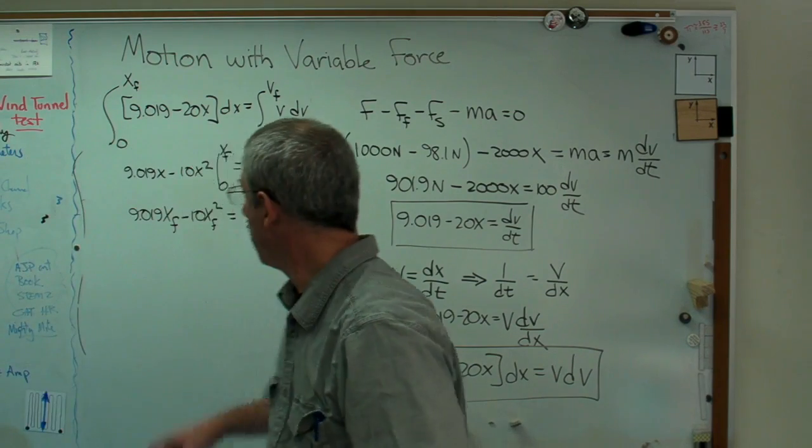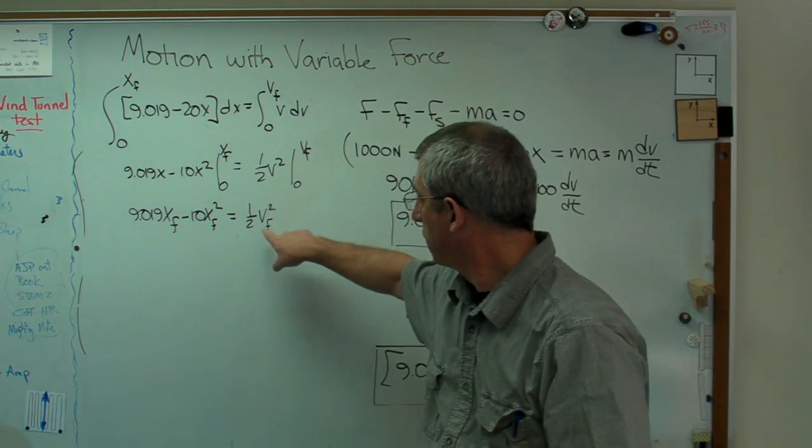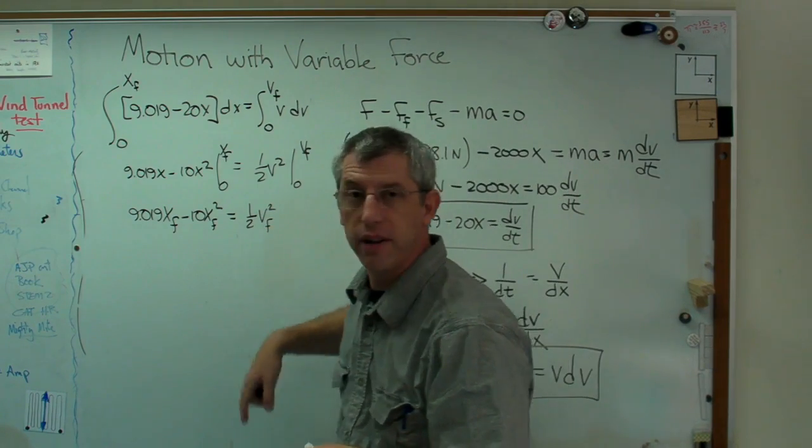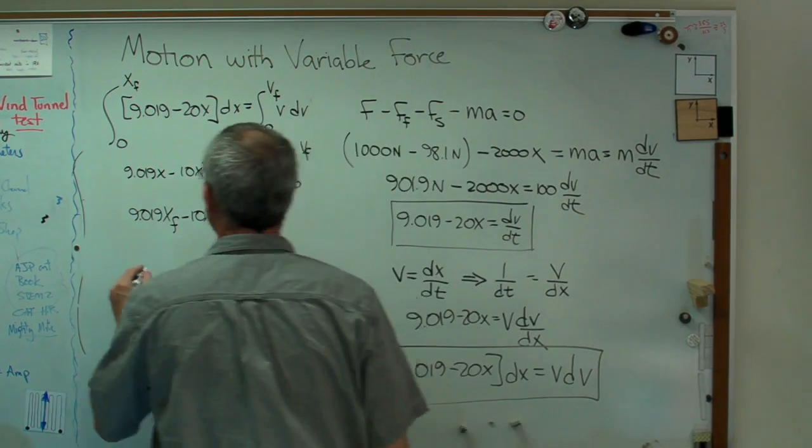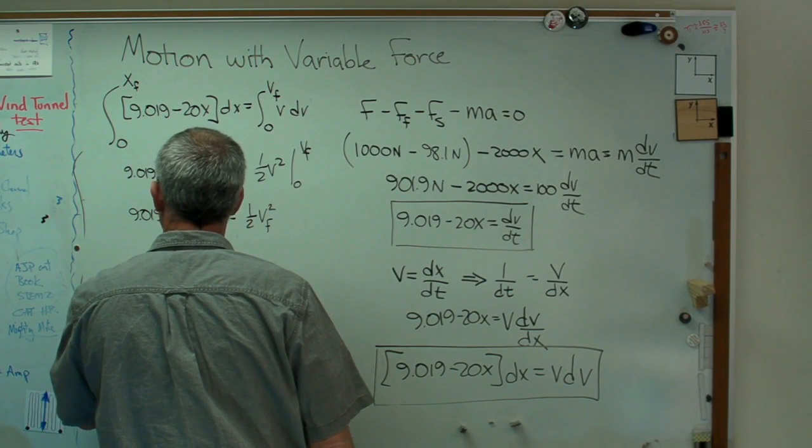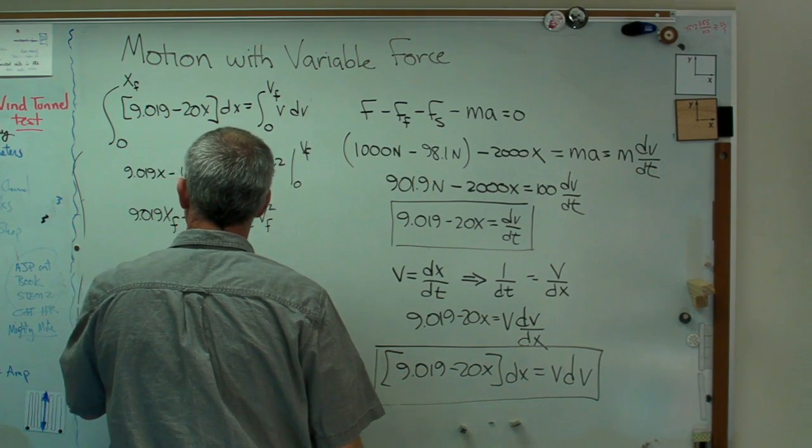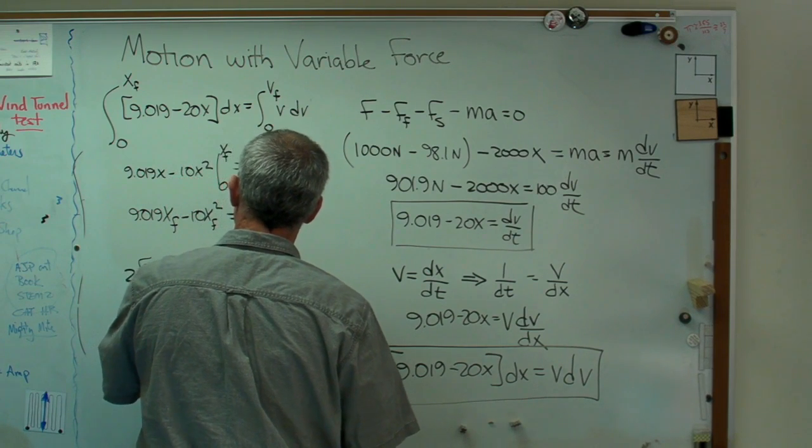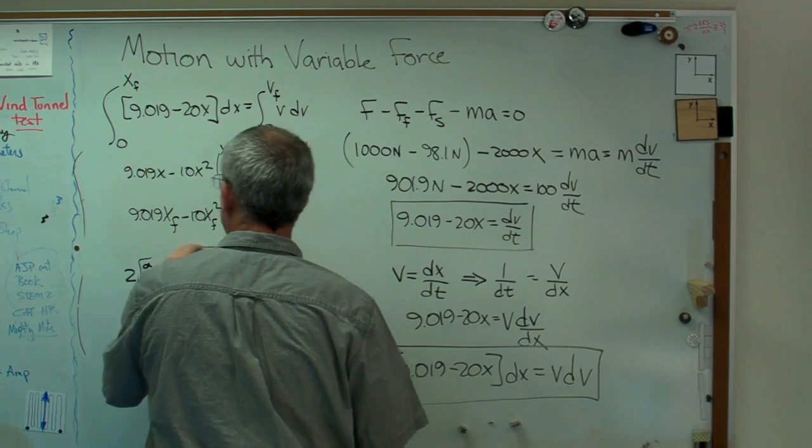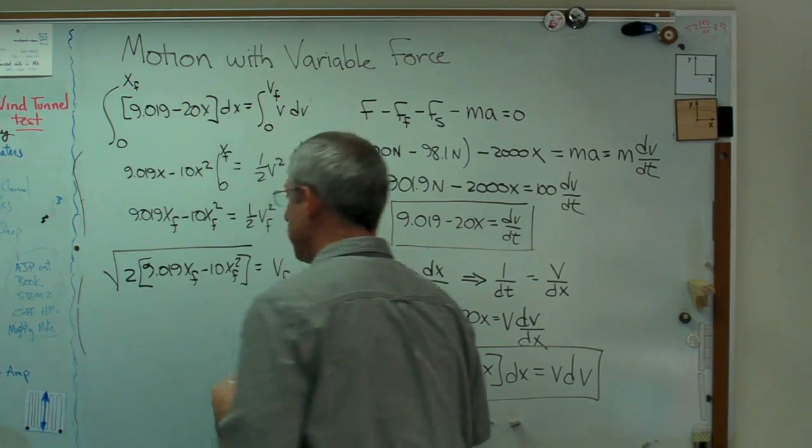Now, since there's zeros in the bottom or in the initial point, this is going to be even easier. I get 9.019x final minus 10x final squared equals 1 half v final squared. Alright, now I've got, I'm almost there. If I push a 2 over there and take a square root, I'll have v final equals something. Let's just do that real quick. Let's push the 2 over.